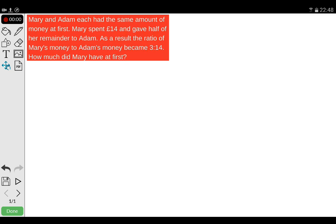It states here: Mary and Adam each had the same amount of money at first. Mary spent £14 and gave half her remainder to Adam. As a result, the ratio of Mary's money to Adam's money became 3 to 14. How much did Mary have at first?